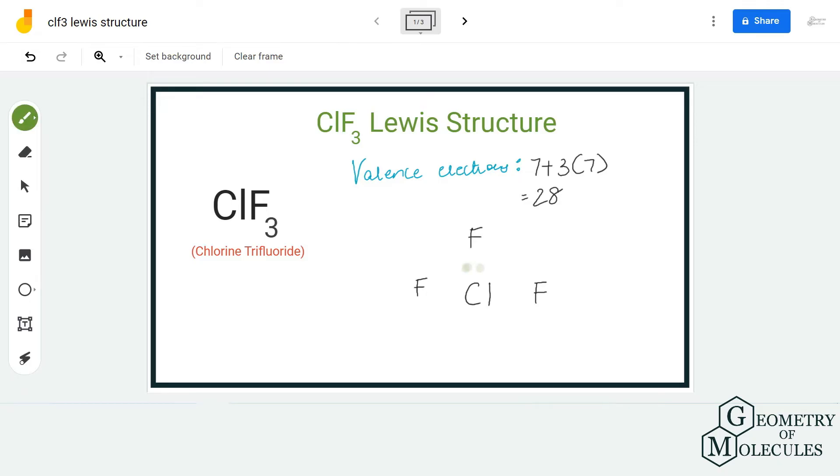You might wonder that this might not be the correct Lewis structure, but hold on. You can check the formal charges and get to know if this is the right Lewis structure. So let's check the formal charges using this formula, or you can also calculate it using the link that we have given in our description box below.